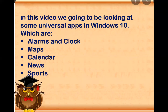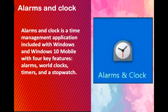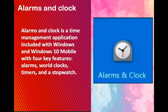The universal apps we'll cover include alarms and clock, maps, calendar, news, and sports. First, let's look at alarms and clocks. Alarms and clock is a time-managing application included with Windows 10 and Windows 10 Mobile, with four key features: alarms, world clocks, timer, and a stopwatch. Here is its logo.